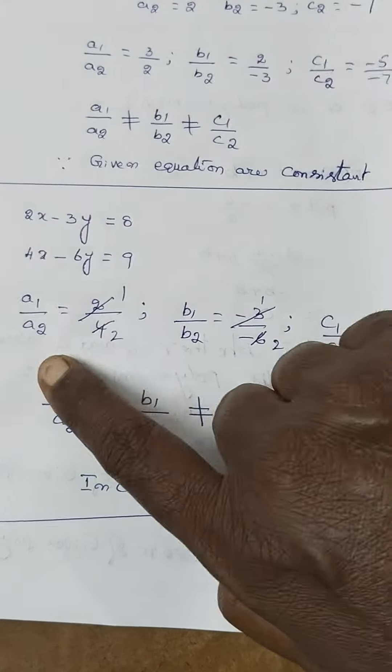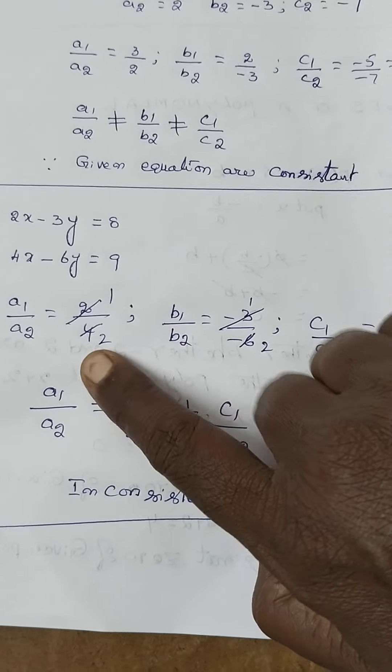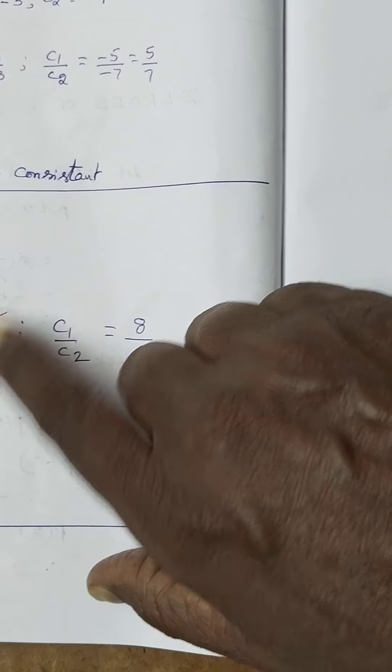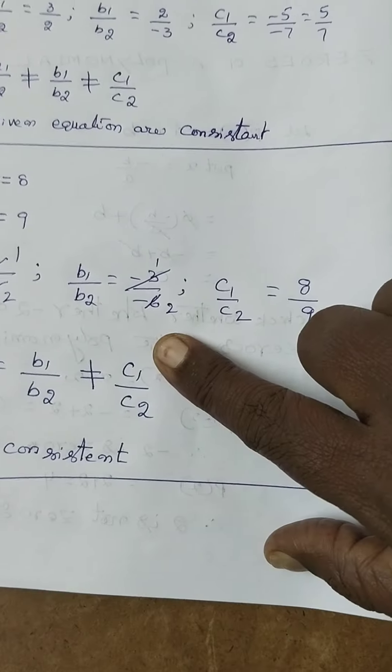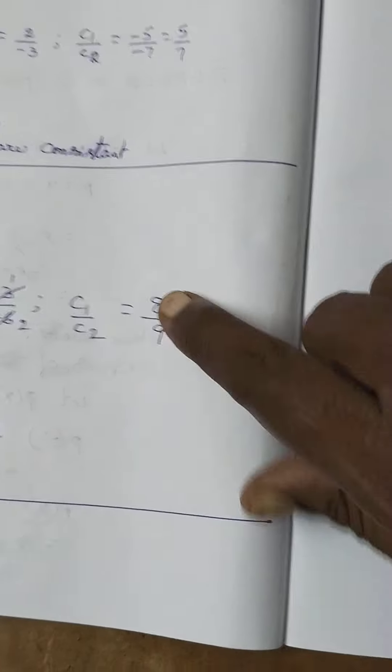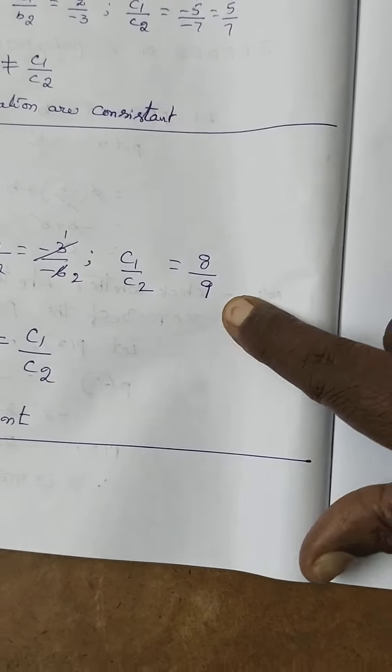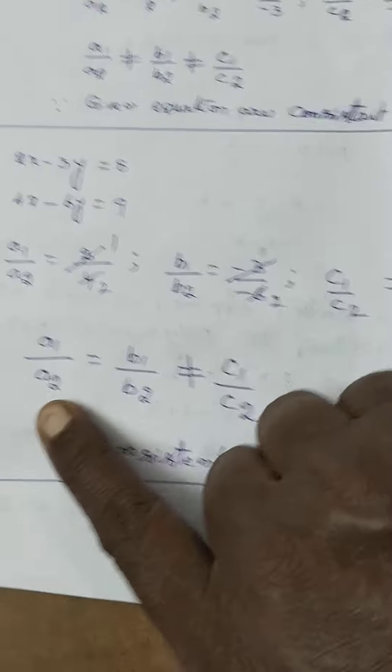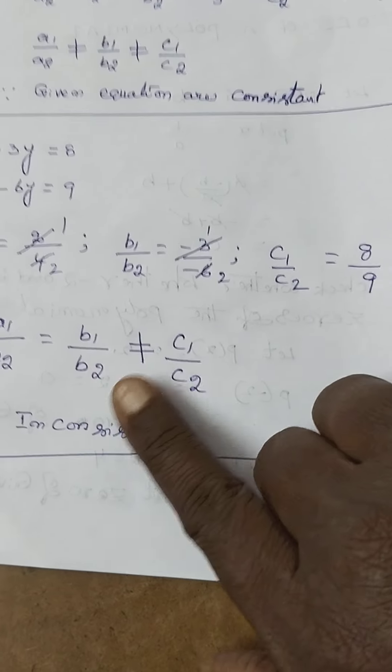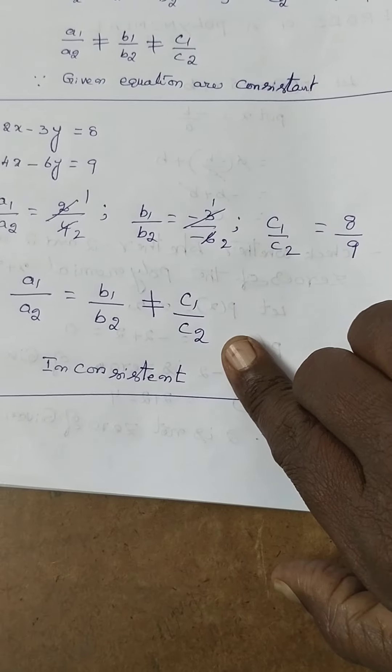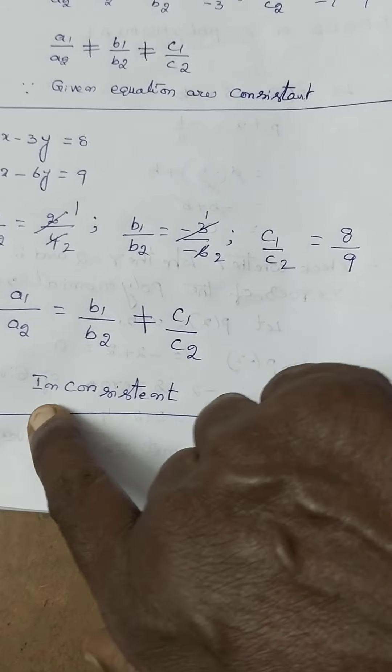Here also, A1 by A2, 2 by 4, 2 will be cancelled 2 times, 1 by 2. B1 by B2, minus and minus plus, 3 will be cancelled in 6, 2 times, 1 by 2. So, C1 by C2 is equal to 8 by 9. A1 by A2 equal to B1 by B2 is not equal to C1 by C2. So, these are inconsistent.